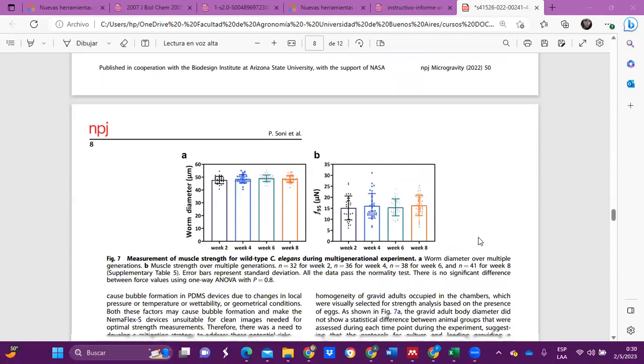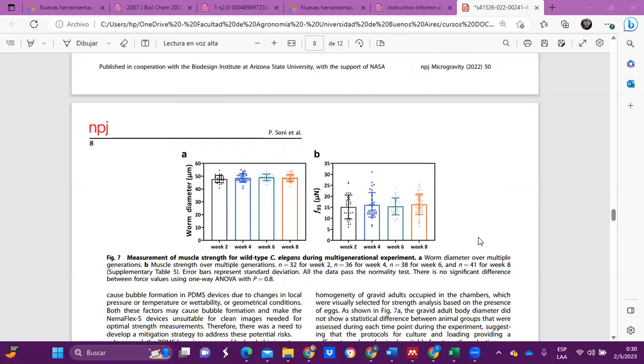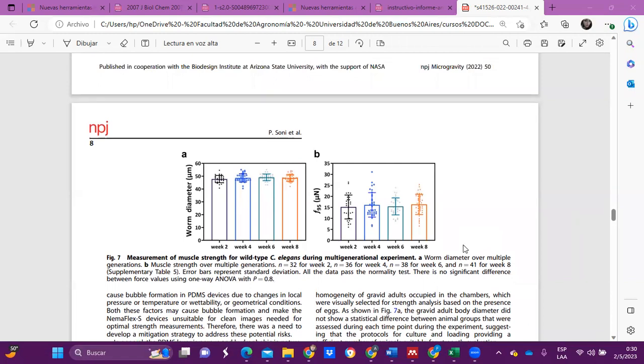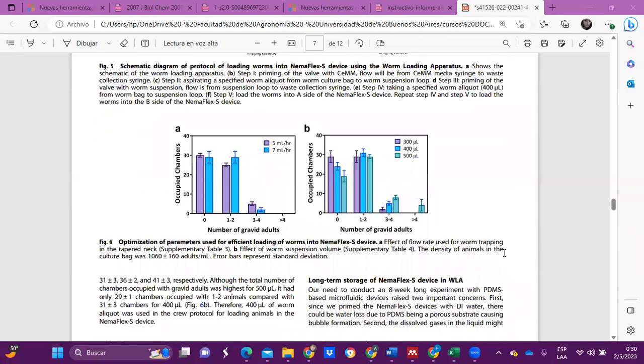Next, they optimized the worm suspension volume while keeping all other parameters constant, and they used three different volumes of worm suspension to load the NemaFlex device. The total number of chambers occupied by one to three, four, and five microliters were 31, 36, and 41, respectively. Also, the total number of chambers occupied by one to two gravid adults was highest for 5 microliters. It had only 20 chambers occupied by one or two animals compared with the chambers for the volume of 4 microliters.